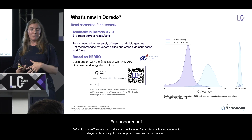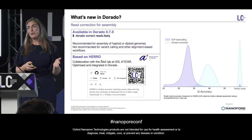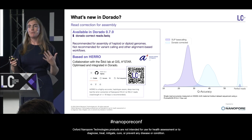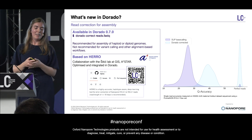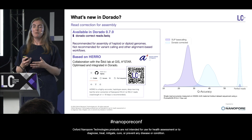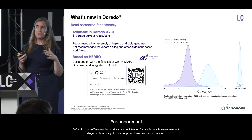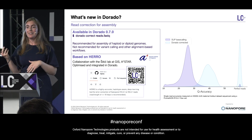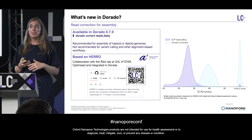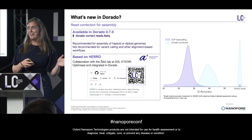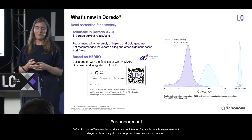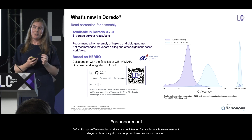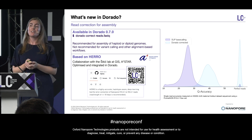Alongside the base calling improvements, we also have a new read correction tool intended for use with assembly, particularly haploid and diploid assembly. Sean is going to talk a lot more in his talk about how we're using this to create state-of-the-art telomere-to-telomere nanopore assemblies. This tool is available with the Dorado Correct command and is based on HERO, which is a collaboration between our teams and the Sequeage Lab at GIS A*STAR. There will be a preprint coming out over the next few days, and the lead will be giving a talk here on Thursday.